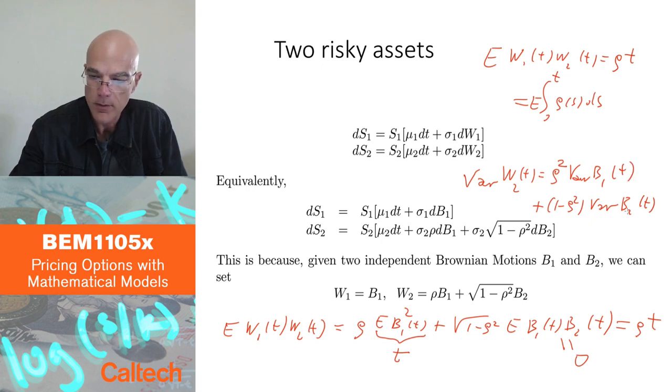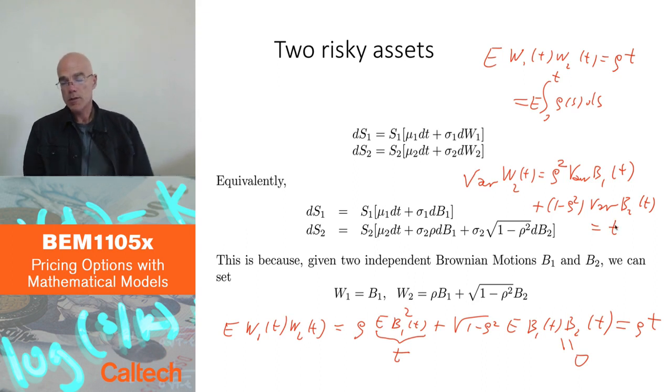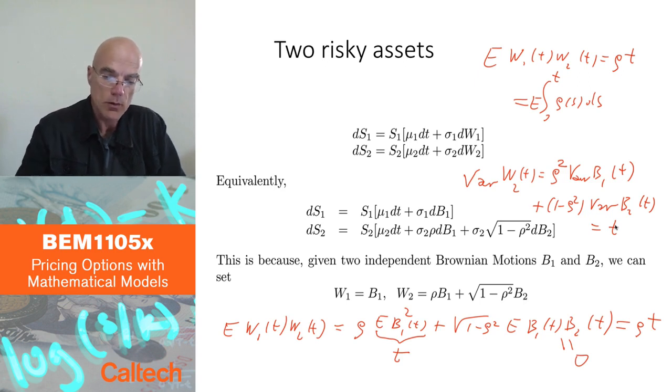But these are t, both of these variances are t, so you have rho squared t plus 1 minus rho squared t, rho squared and rho squared cancel and just get t, which is the variance of Brownian motion. So indeed w2 is a Brownian motion and it has correlation rho with w1.